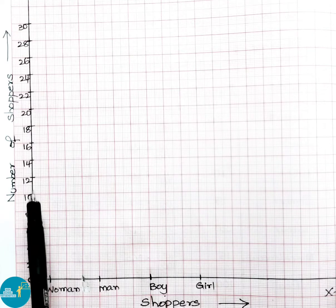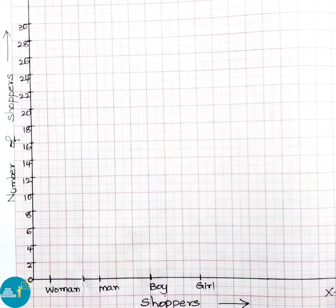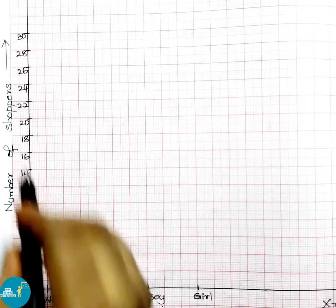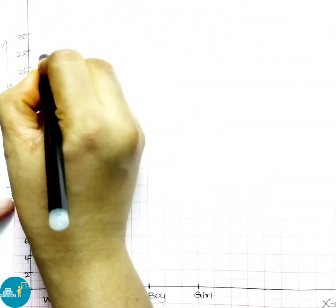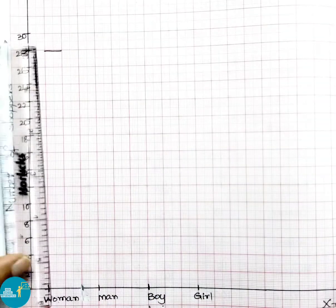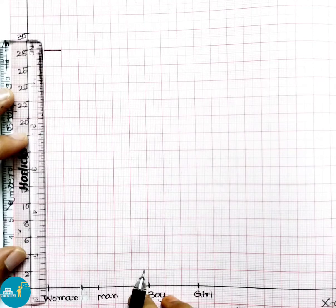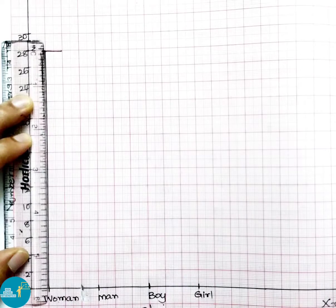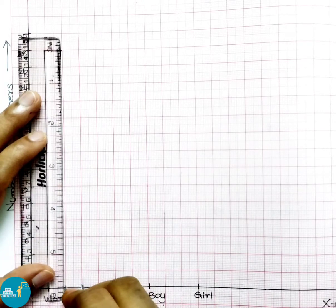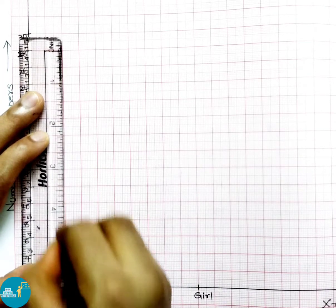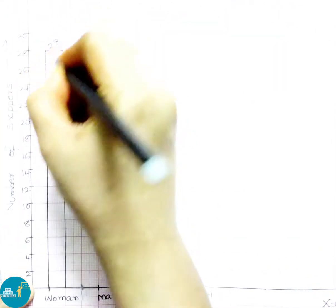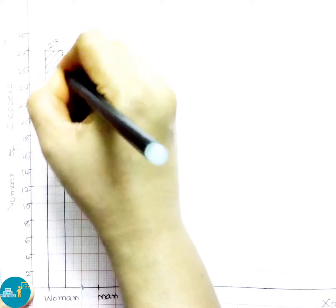Here we have taken 1 cm equals 2 units, so the y-axis goes 2, 4, 6, 8 and so on up to 30. Women are given as 28, so we draw a bar up to 28 from the women column on the x-axis and shade it.